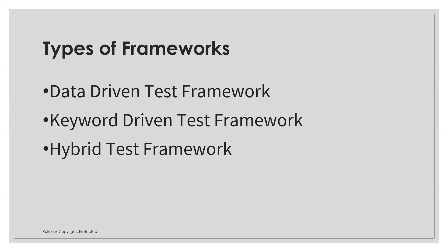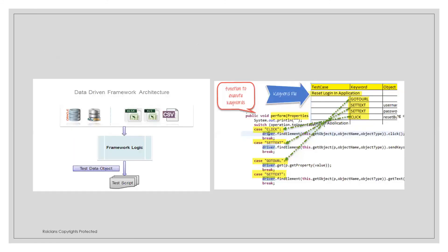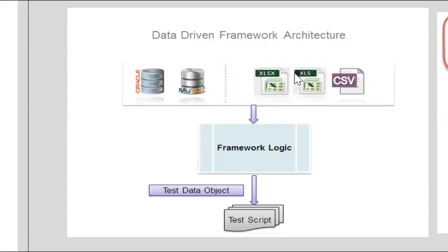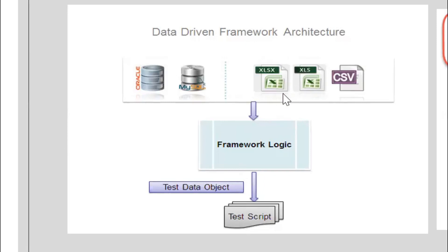Now let's understand what are the different types of frameworks. We mainly have three types: data-driven test framework, keyword-driven test framework, and hybrid test framework. We're going to learn hybrid test framework, which is what companies commonly use. First, data-driven framework is like parameterization — if I'm passing multiple sets of data to my test cases from external Excel sheets or databases, it is called a data-driven framework.